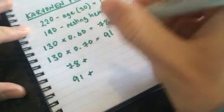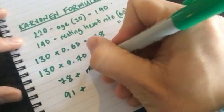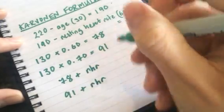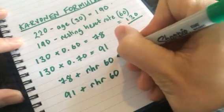And then the final thing I need to do is I need to add back on my resting heart rate up here, which was 60. So I'm going to put RHR, which stands for resting heart rate, which is 60 on both of them.